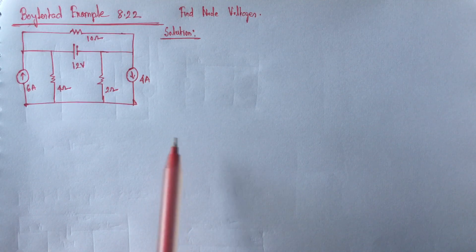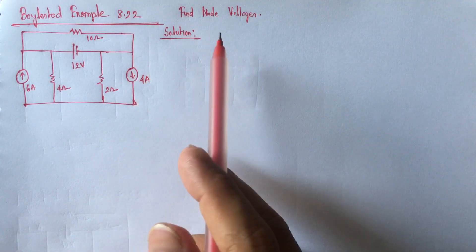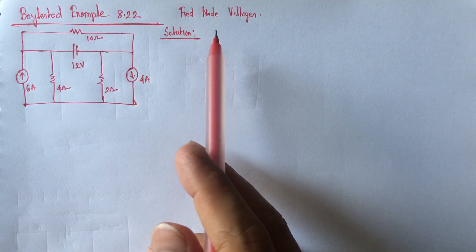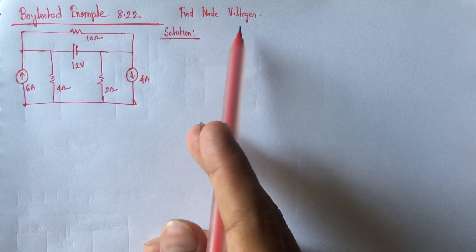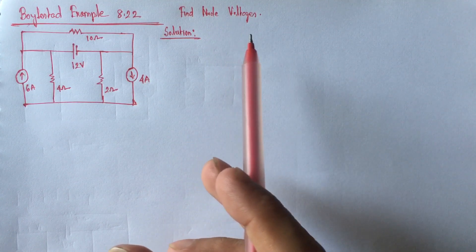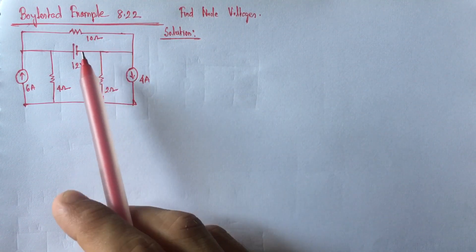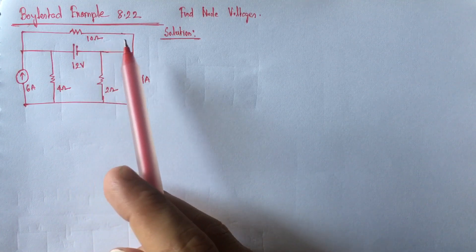Hi viewers, today we will solve example 8.22 from Boyle State. This is a nodal analysis problem. Here we have to identify node voltages for the circuit. This is a super node related problem.